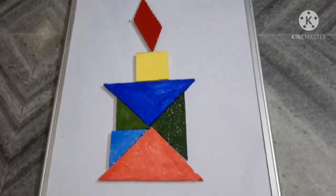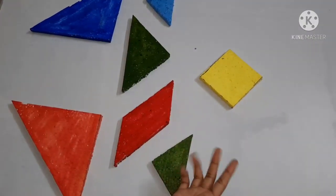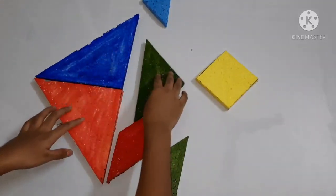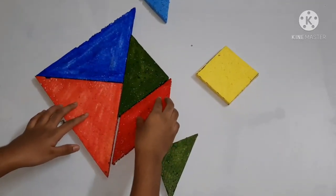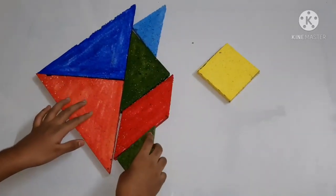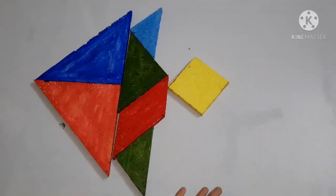So this is a candle. Now we are going to make a fish. So this is a fish.